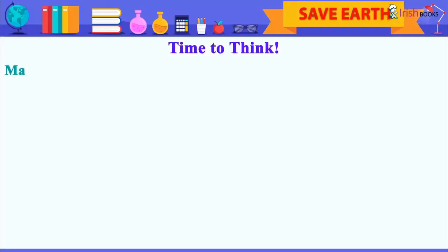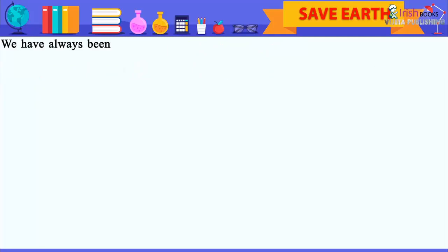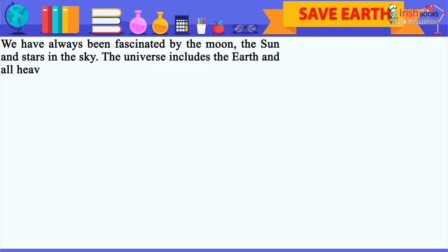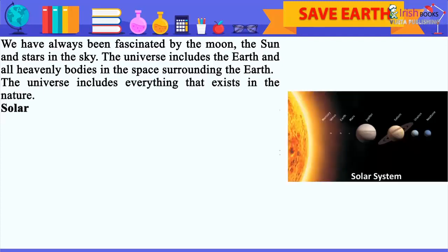Our Universe. Time to Think: Make a neat and labelled diagram of the solar system in your scrapbook. We have always been fascinated by the moon, the sun and stars in the sky. The universe includes the earth and all heavenly bodies in the space surrounding the earth. The universe includes everything that exists in nature.